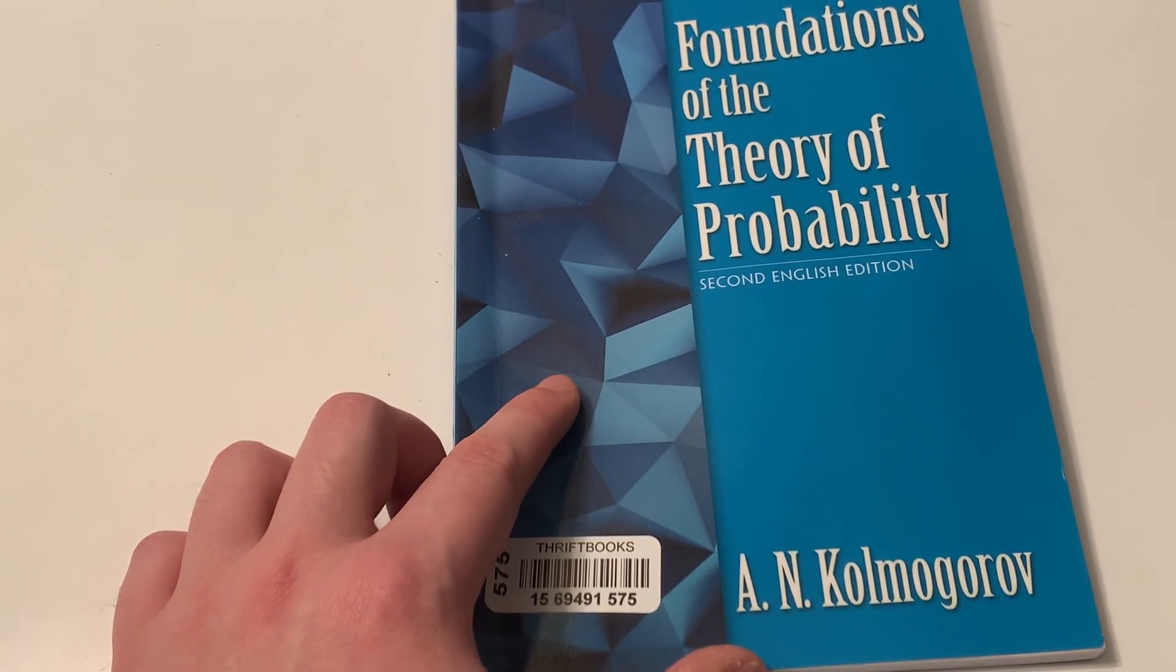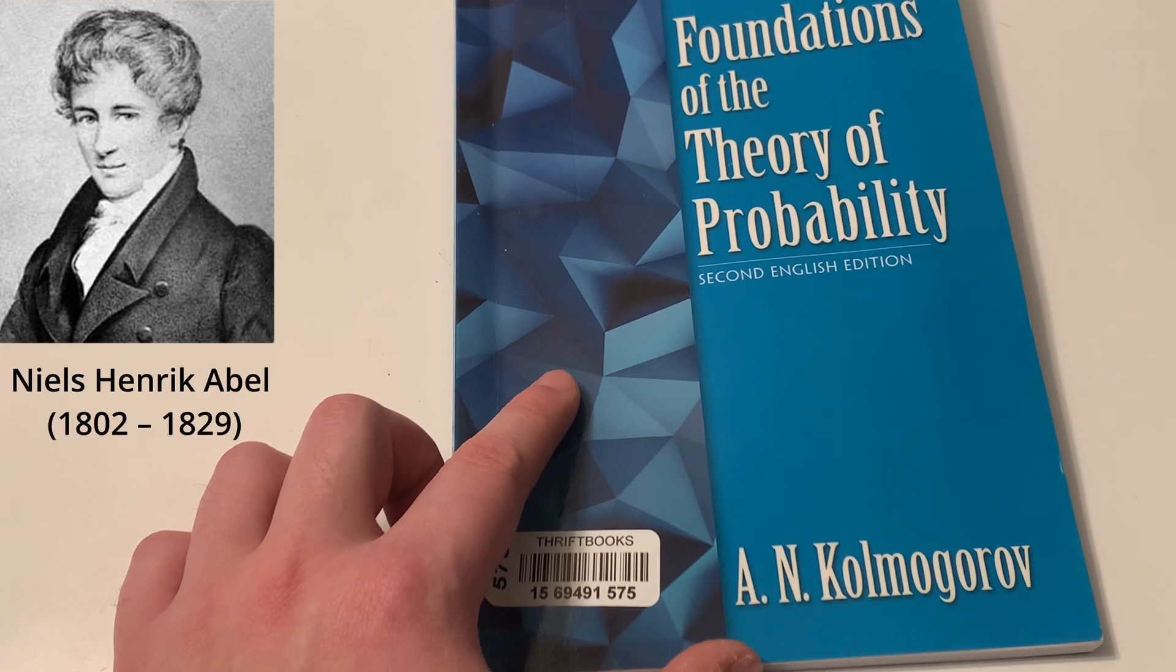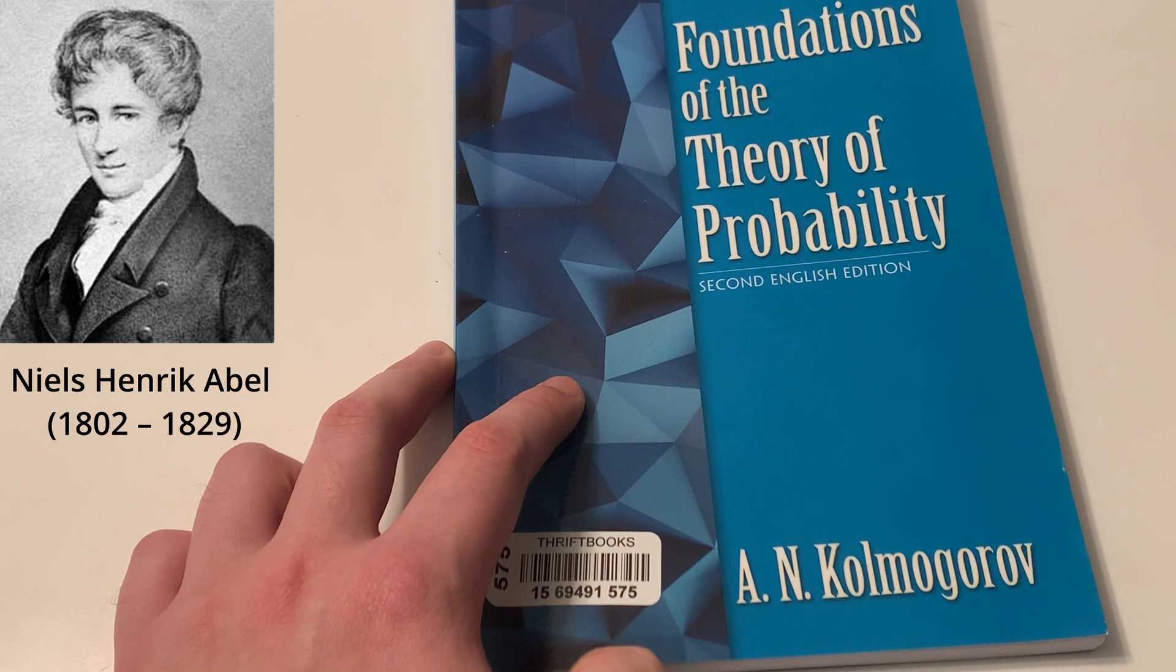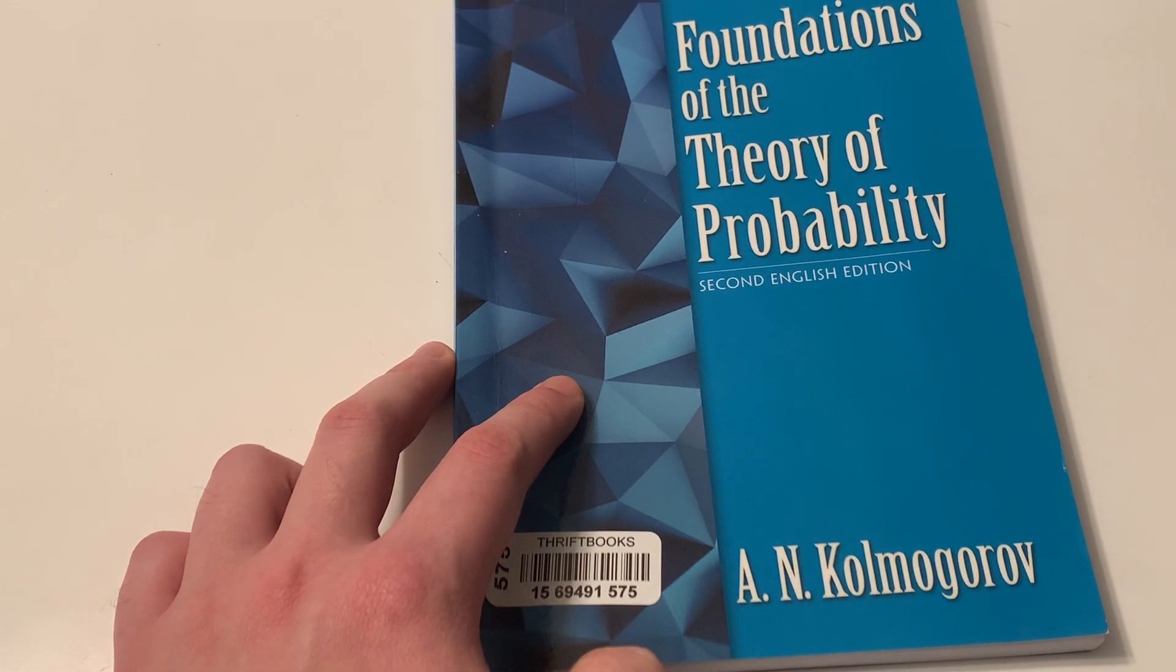So yeah, that's the end of today's video. Definitely, this is not a book for light reading. But as Abel once said, the best way to make progress in mathematics is to learn from the masters. And Kolmogorov, without a doubt, one of the masters of the 20th century.